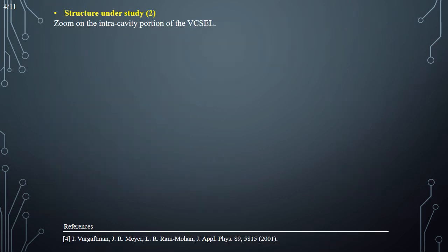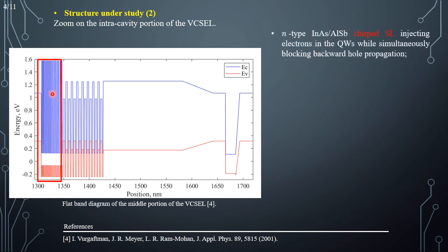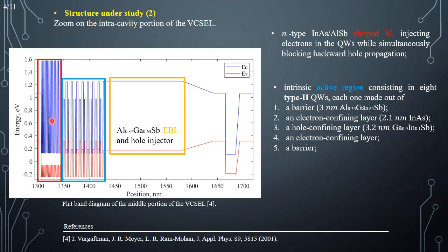By focusing on the middle portion of the device, we can identify some interesting regions. This is the flat band diagram of the structure. On the left, we can see a chirp superlattice injecting electrons into the quantum wells while simultaneously blocking backward hole propagation from right to left. Then we see the active region of the device, consisting of eight Type-II quantum wells, each made out of the layers reported here. There is also a bulky portion made out of an aluminum gallium antimonide layer, acting both as electron blocking layer and hole injector.